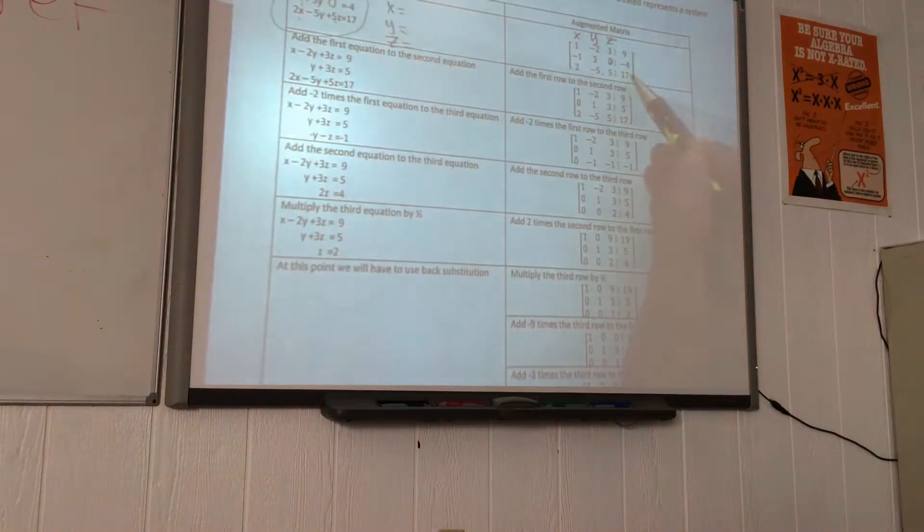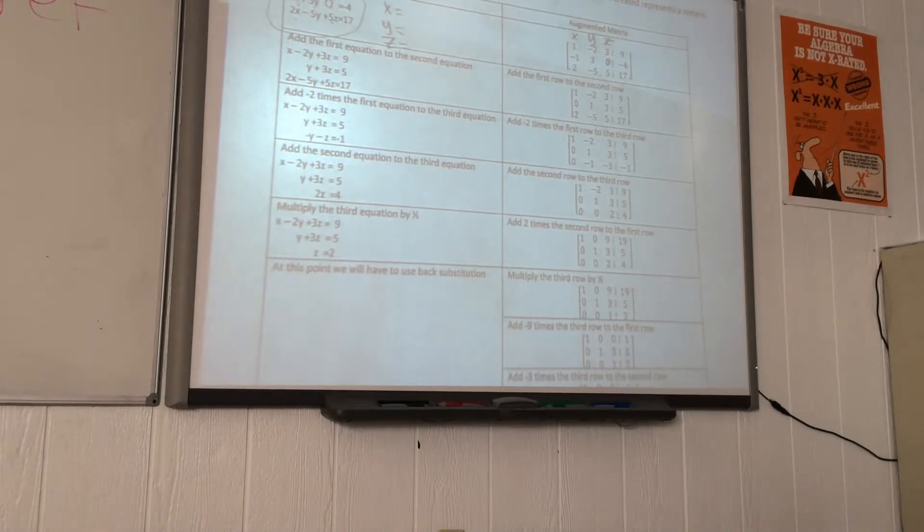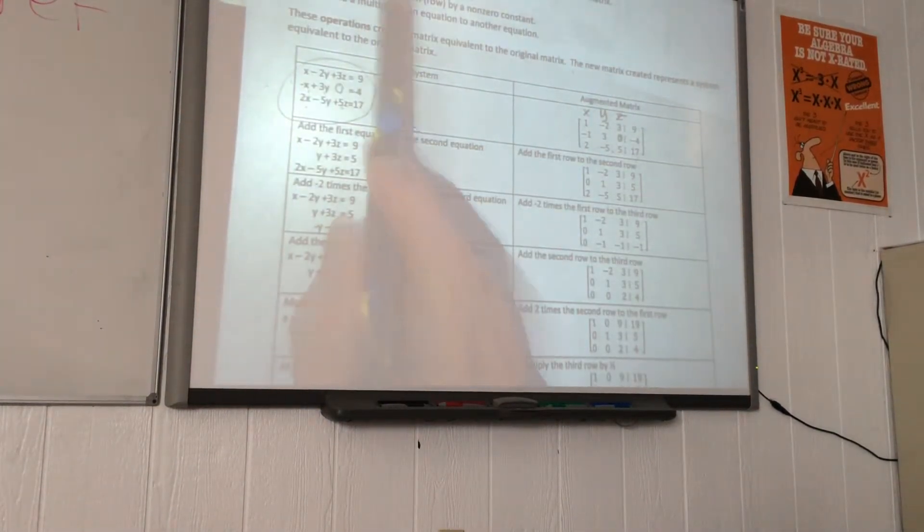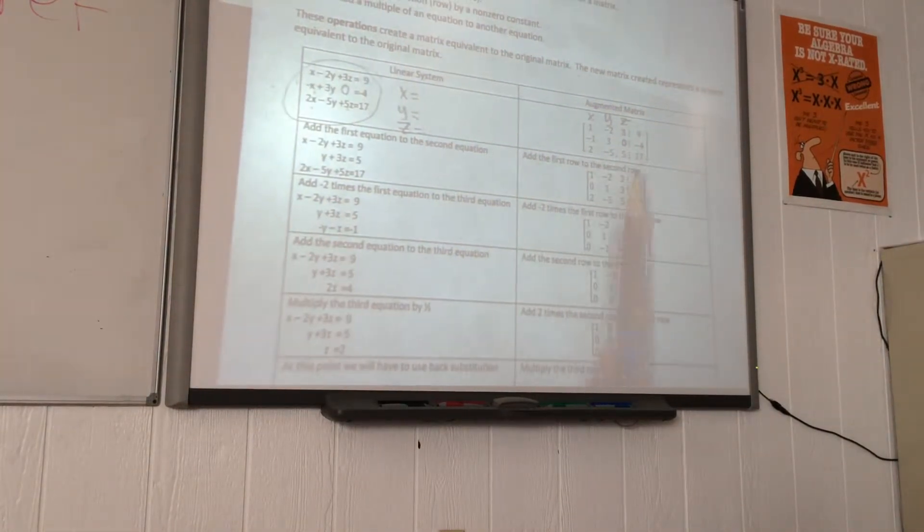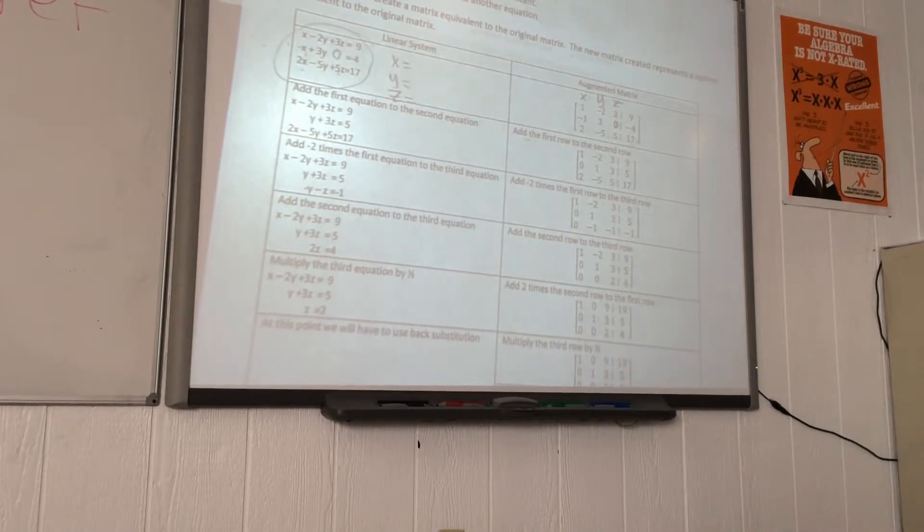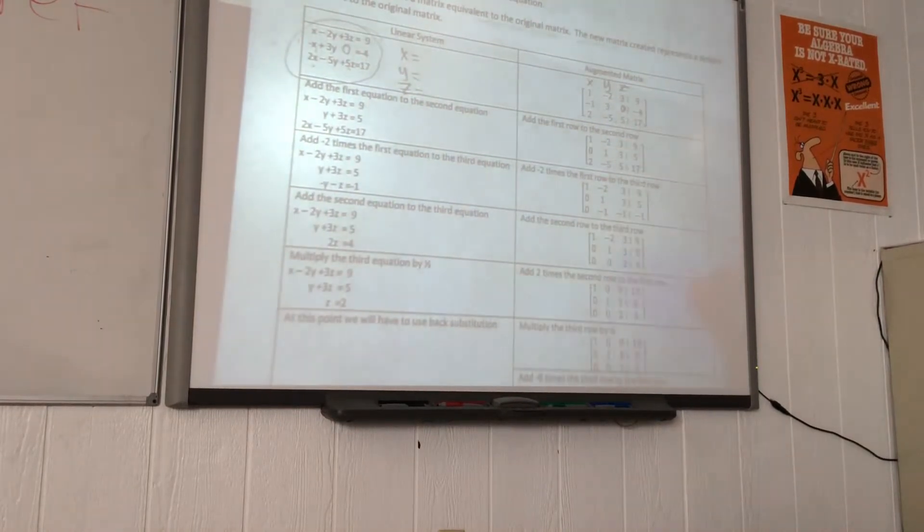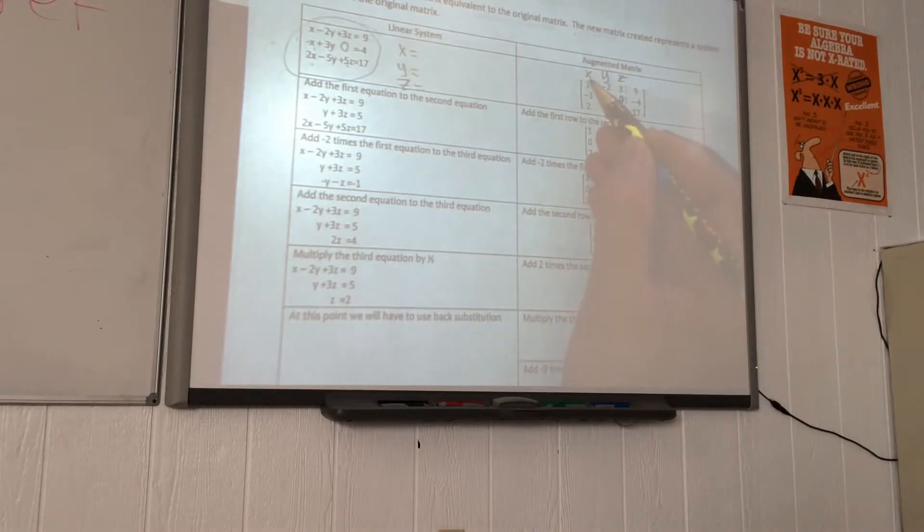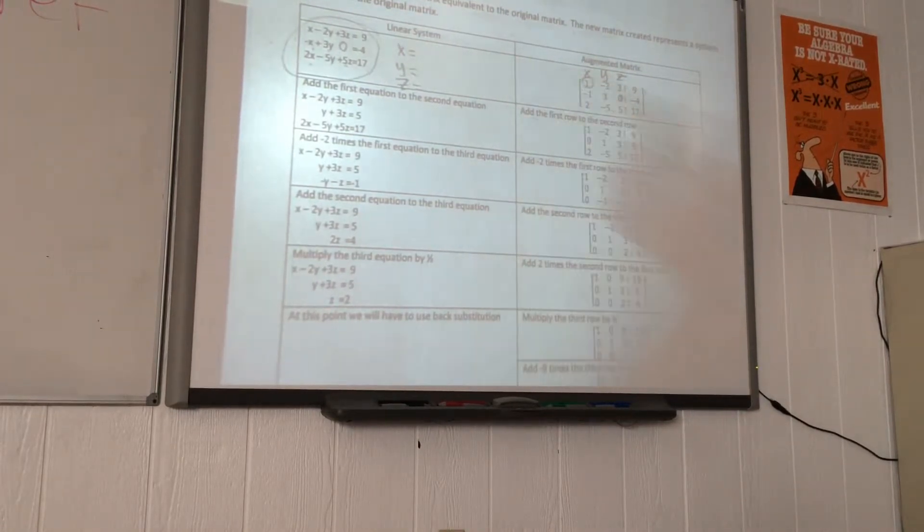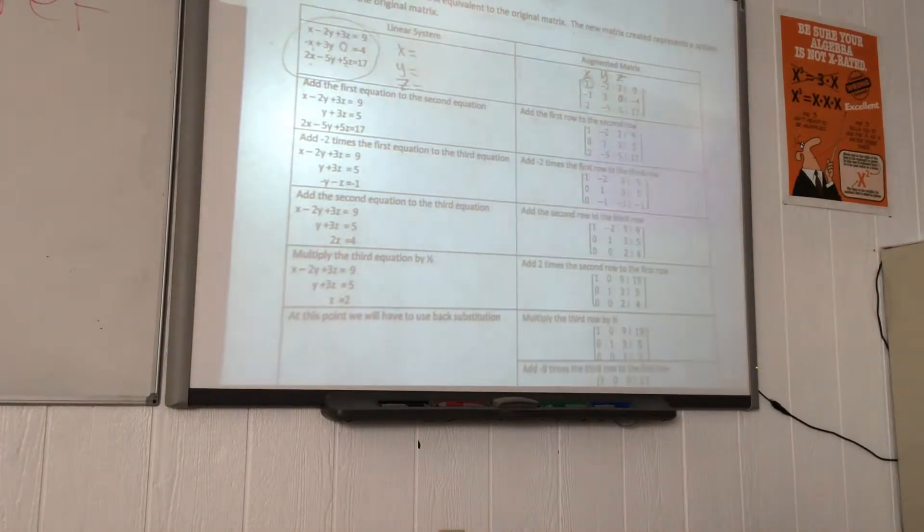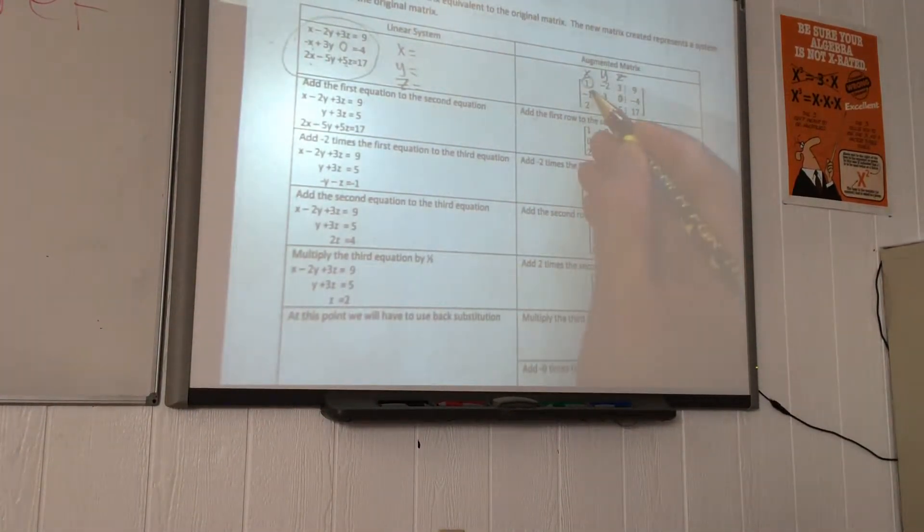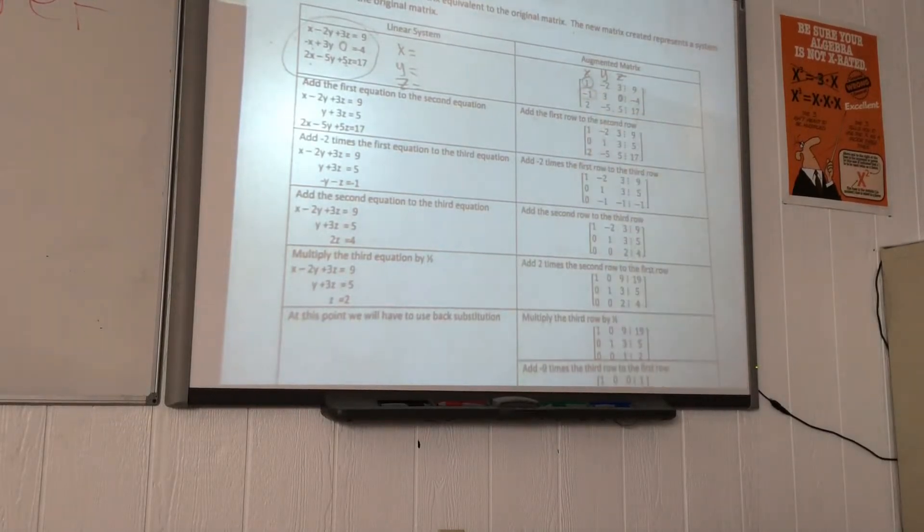Now with the elementary row operations that we mentioned here, they are being described as a sentence. What I'm going to do is write down with row notation. We must start with the first column. First, we need to make that 1. It's already a 1, so there's nothing to do there.